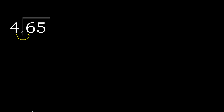65 divided by 4. 6 is not less — therefore with 6, 4 multiplied by which number is nearest to 6 but not greater? 4 multiplied by 2 is 8, which is greater. 4 multiplied by 1 is 4 — 4 is not greater. 6 minus 4 is 2.